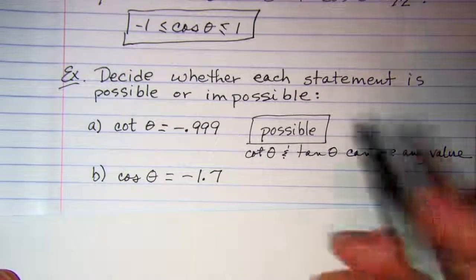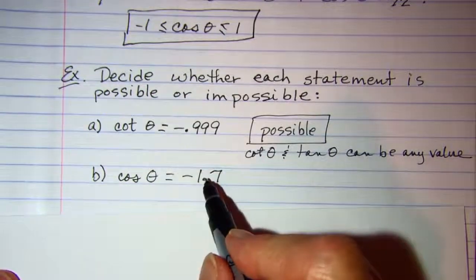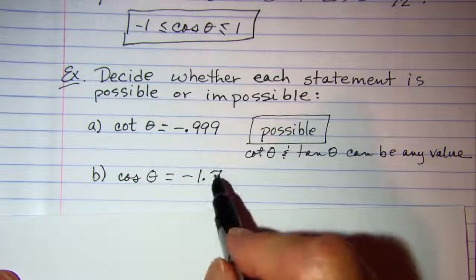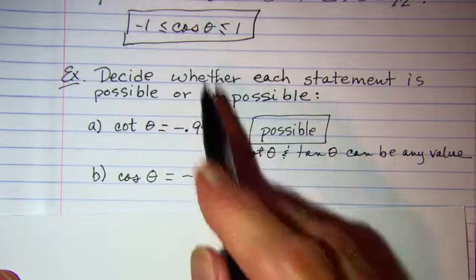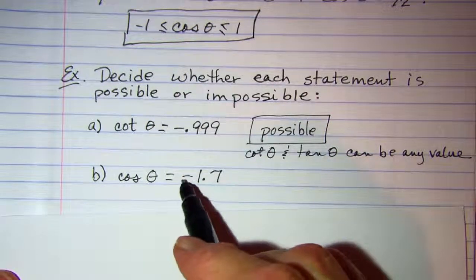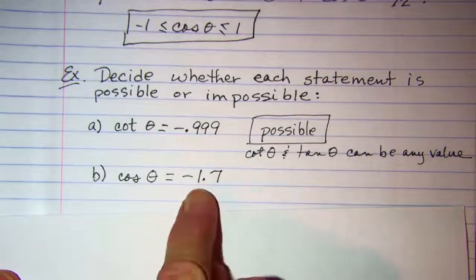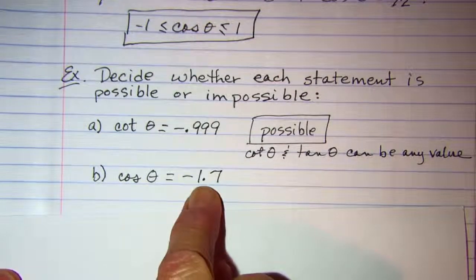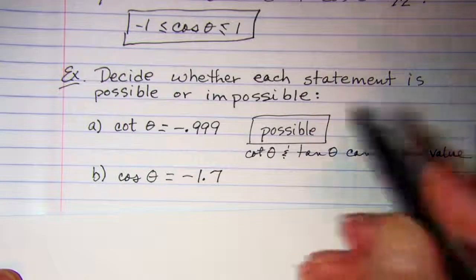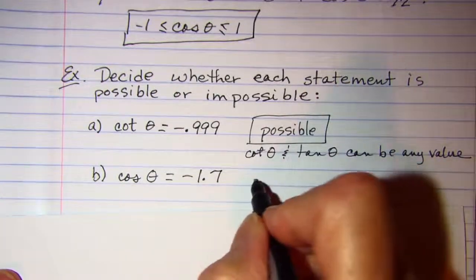Cosine theta equals negative 1.7. This one is similar to the previous example. Cosine and sine have to be between negative one and one, and this number is outside that interval, so impossible.